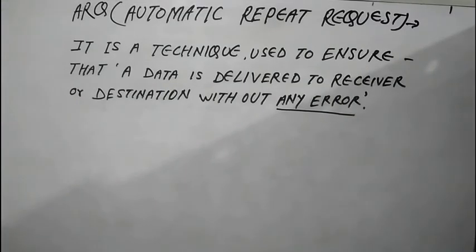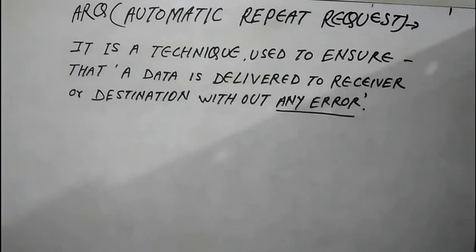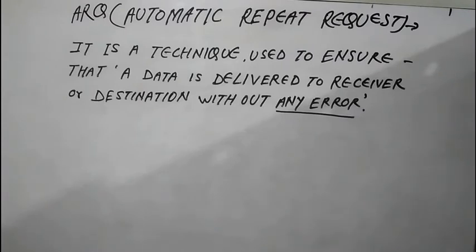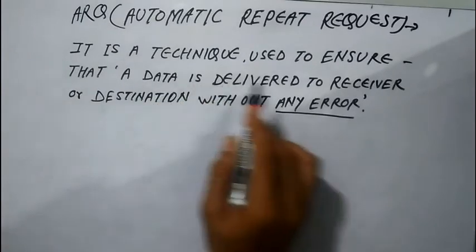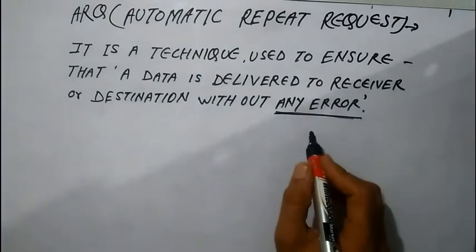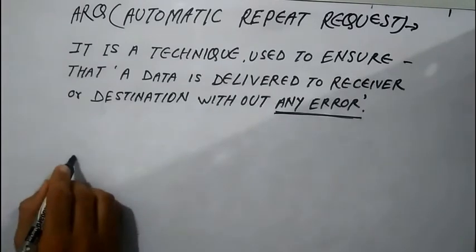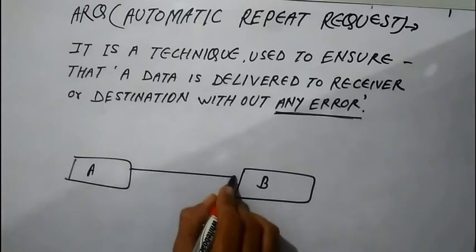Today we will discuss ARQ, that is the Automatic Repeat Request — an error correction method for data transmission. It uses an acknowledgement message sent by the receiver indicating that it has correctly received a data frame or packet from sender to receiver, and timeouts within a fixed time. ARQ is a technique used to ensure that data is delivered to the receiver or destination without any error.